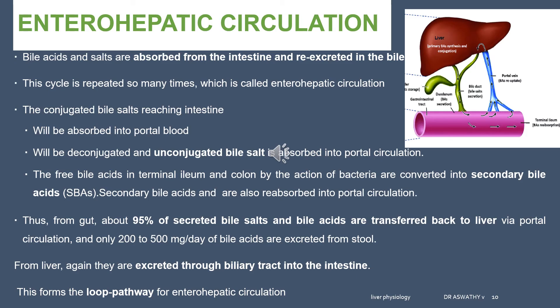Bile acids are formed in the liver, and bile acids and bile salts are secreted into the bile from the liver. This bile reaches the intestine. From the intestine, some conjugated bile salts are absorbed into the portal blood. The rest of the bile salts are deconjugated, and the unconjugated bile acids are absorbed into portal circulation. Free bile acids in the terminal ileum are converted into secondary bile acids, which are also absorbed into the portal circulation. So 95% of the secreted bile salts are absorbed back into the portal circulation. When the portal circulation reaches the liver, hepatocytes take up all these bile acids. Even if some bile acids reach the systemic circulation, the kidney takes them up and sends them back to the liver — this loop pathway is called enterohepatic circulation.